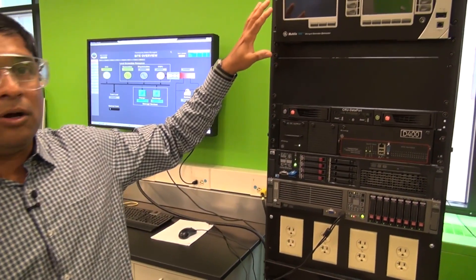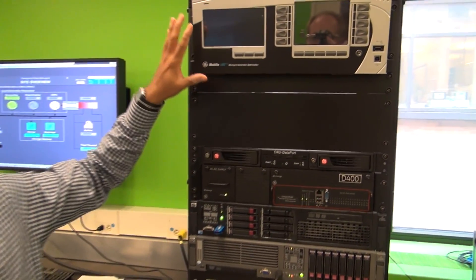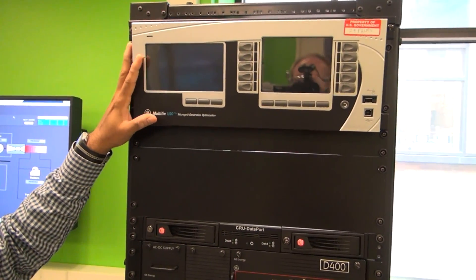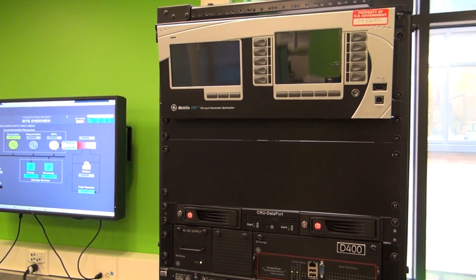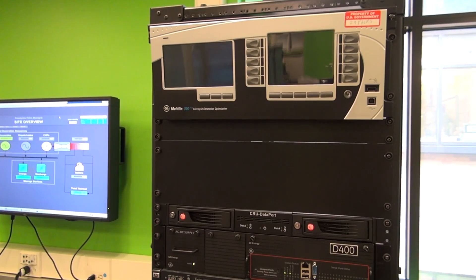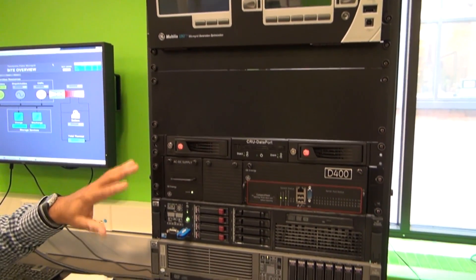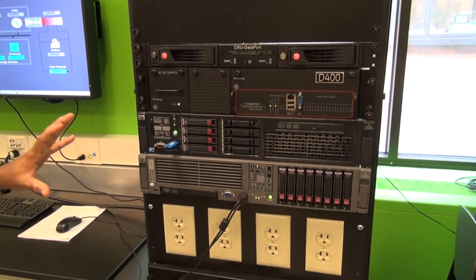So we will use some controllers that you see here right now. For example, this one is a microgrid controller that provides efficiency to the system, that kind of optimizes the system for the best performance. And then there are other types of control boxes or servers that you see in this kind of rack.